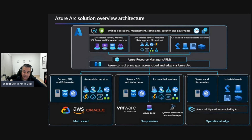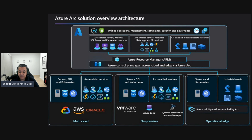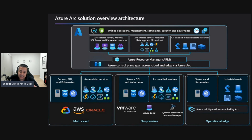From a Kubernetes clusters perspective, you can attach and configure clusters running essentially anywhere with multiple supported distributions. With Azure data services, you can run data services on-premises, at the edge, or in the public cloud using Kubernetes and the infrastructure of your choice. SQL Managed Instance and PostgreSQL — which are currently in preview — are available as well. You can also extend Azure services to SQL Server instances. This diagram is a really good representation of the services supported in Azure Arc.